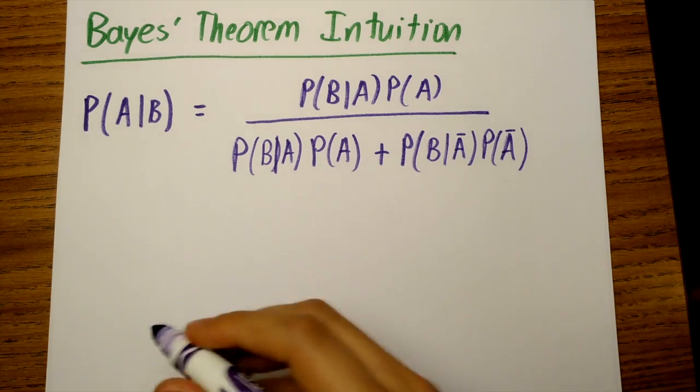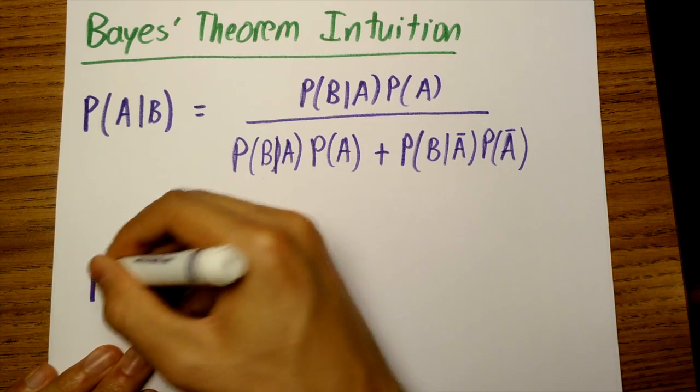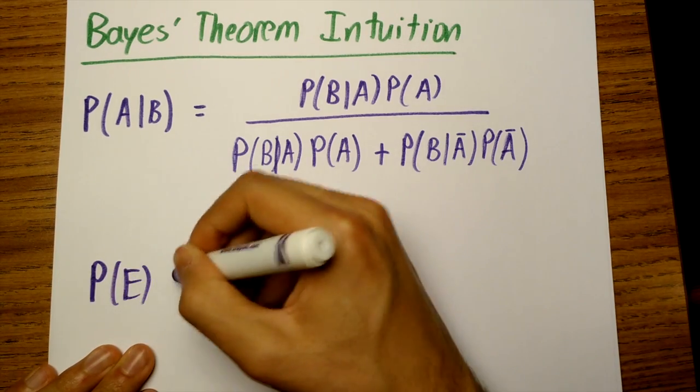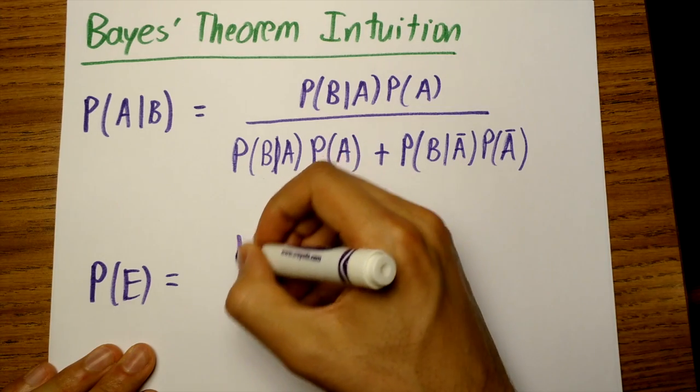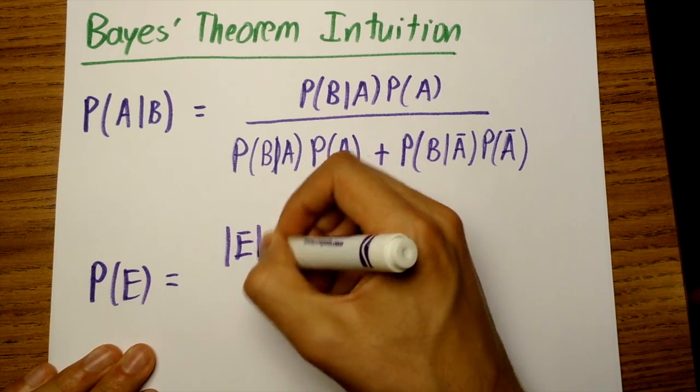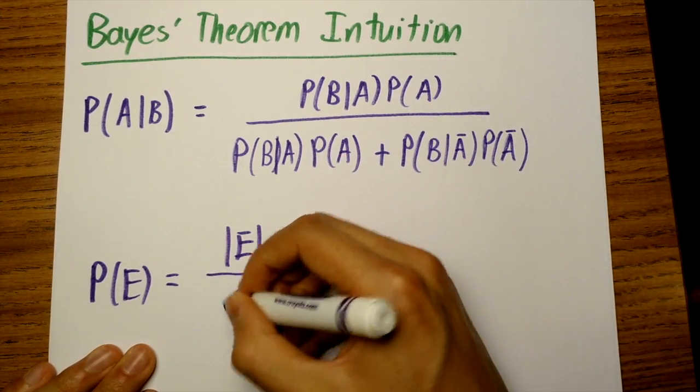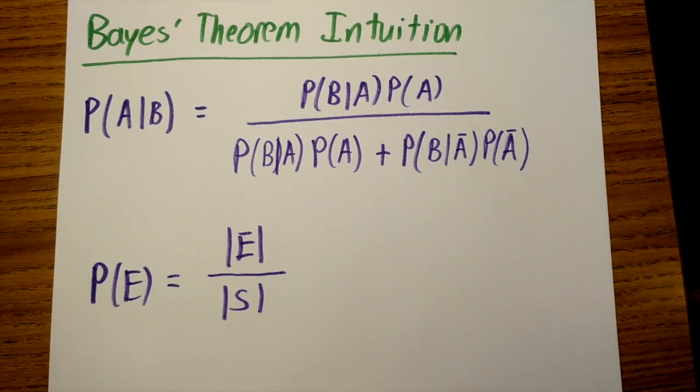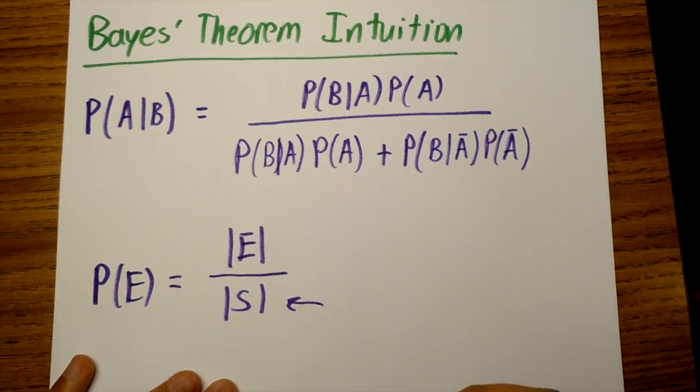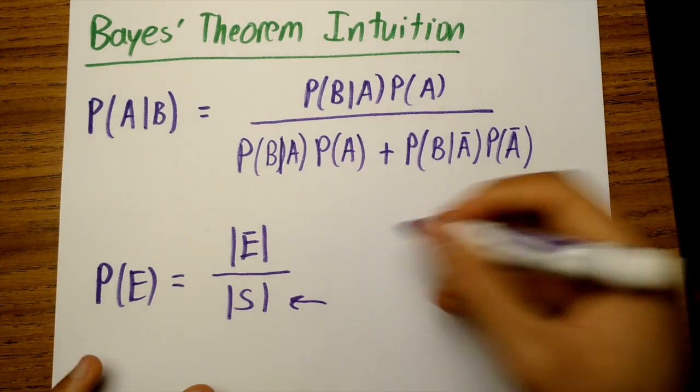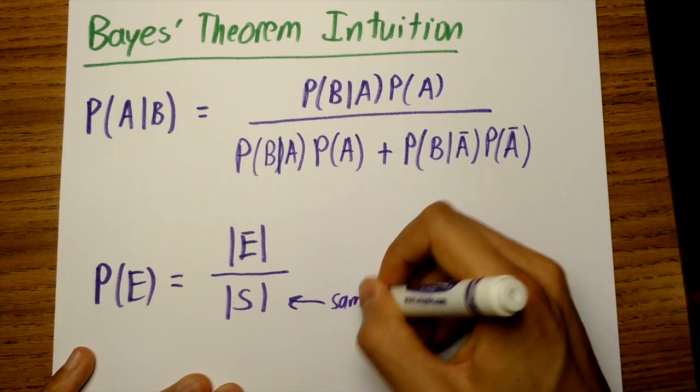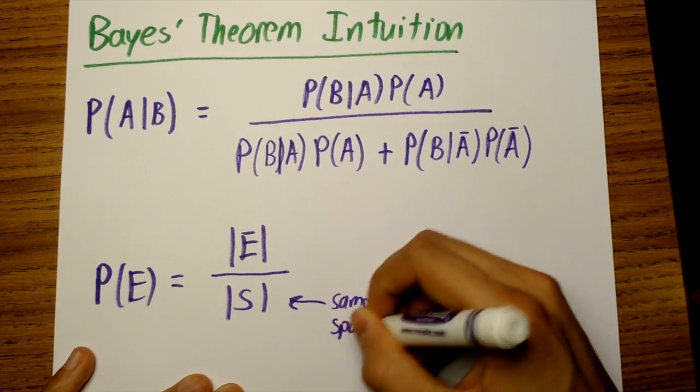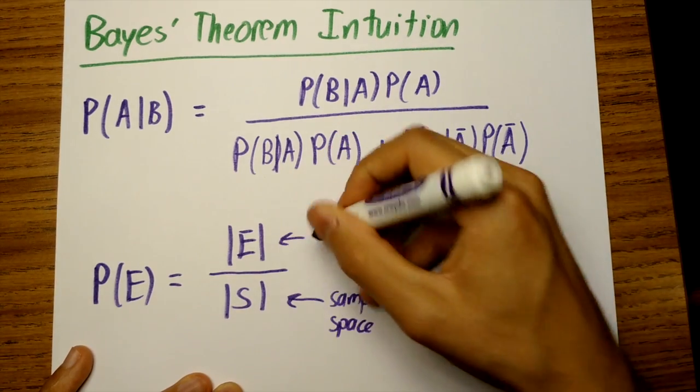The probability of an event happening is the number of ways that event could happen divided by the sample space. The sample space describes all the possible outcomes. So P(E) equals |E| divided by |S|, where E is our event and S is the sample space.